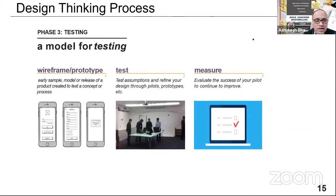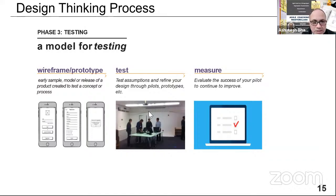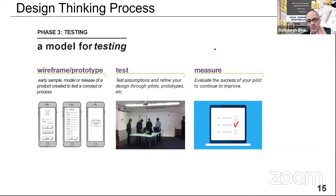Phase three is prototyping: you develop something demoable that can be showcased to end users, then test and measure it. Even after prototyping, you can go back — to problem definition, ideation, or even the empathy phase if you realize an important persona was completely skipped. That happens often; we have to come back and recreate the persona. In IT, we do a lot of wireframes.